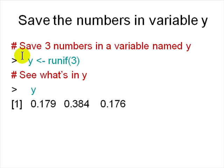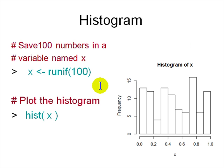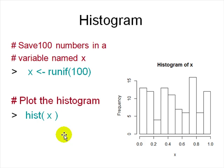You can save the output in a variable y and then inspect y. You can also look at a histogram of a larger set: generate 100 uniform random numbers, save in x, and plot as a histogram — this is the frequency plot of x.